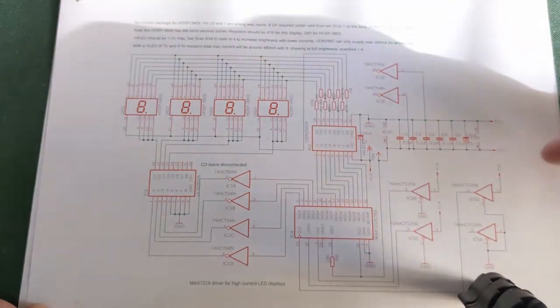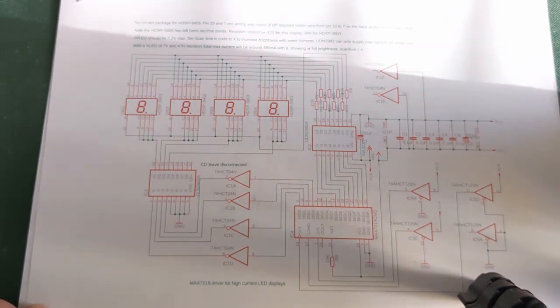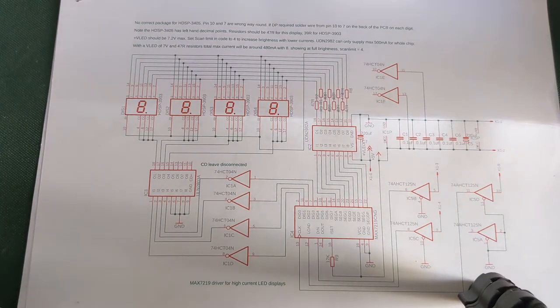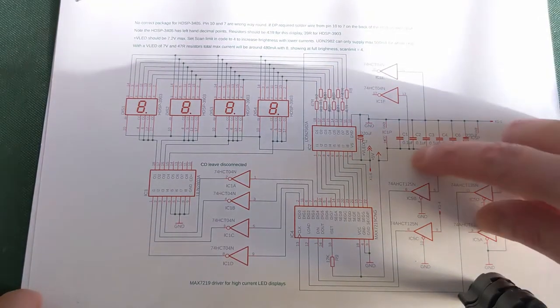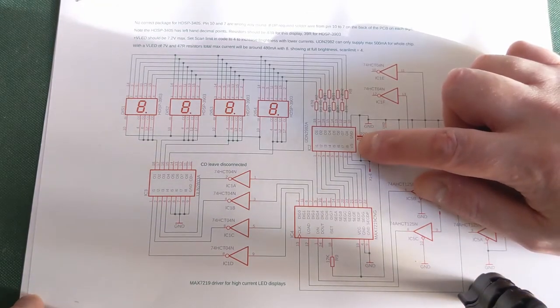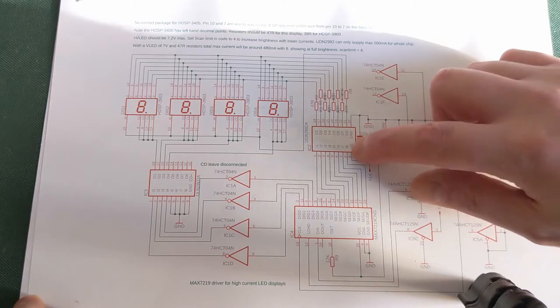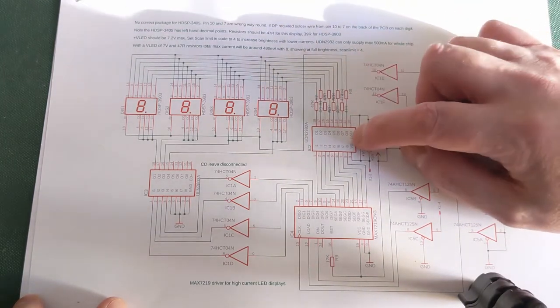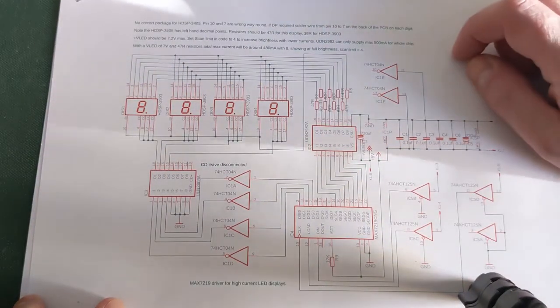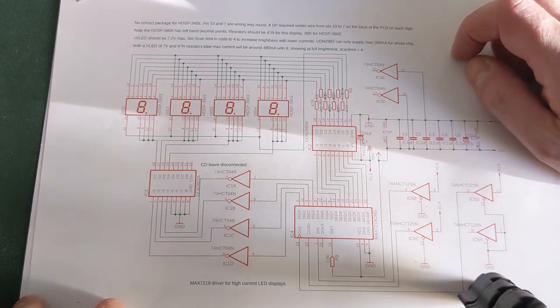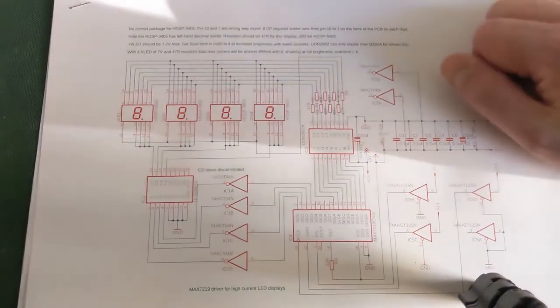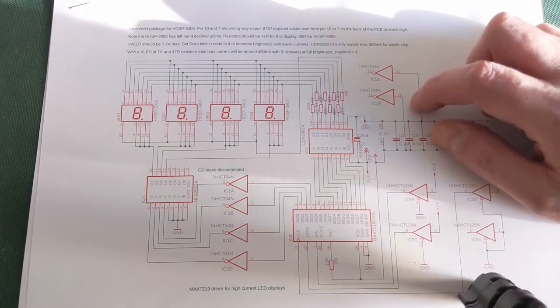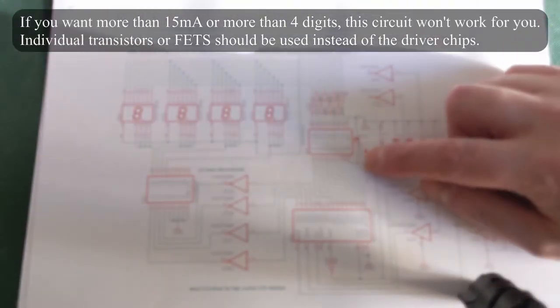So the MAX7219 is okay for driving the smaller LED displays and/or high efficiency ones. But if you want to use standard efficiency displays or large displays, then you can use a driver circuit like this. Even if you use one of the large 4-inch displays, your total current through each segment is going to be the same, but your voltage is going to be higher. These two drivers will take up to 50 volts. So even if you've got a massive LED display with eight chips per segment, you could run it, because your total current is still only going to be 15 milliamps through the whole string of LEDs. All that changes is your voltage.